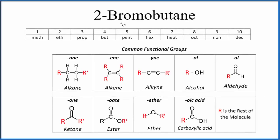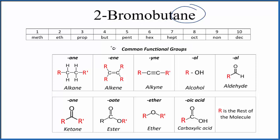Let's take a look at the structural formula for 2-bromobutane. The first thing we see is that we have ANE at the end. When we see ANE, it means we have an alkane. Alkanes are going to be all carbon atoms single-bonded.